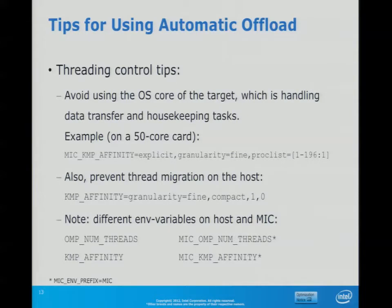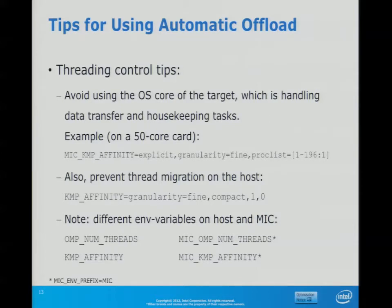Here are some tips for automatic offload. You can explicitly set affinity — for example, 200 threads across 50 cores. You can write MIC_KMP_AFFINITY with granularity=fine or core and then say balance. You should also pin the host system because in automatic offload both the host and MIC are used in heterogeneous execution, so host affinity also matters. Use the usual fine, compact, 1,0 settings as a starting point.